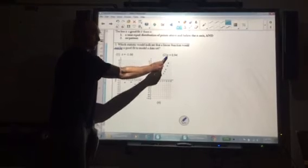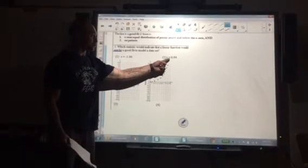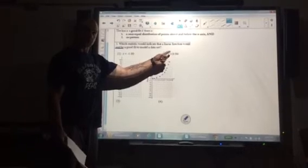Number 2, r is 0.94. That also indicates a strong positive fit because it's very close to 1.